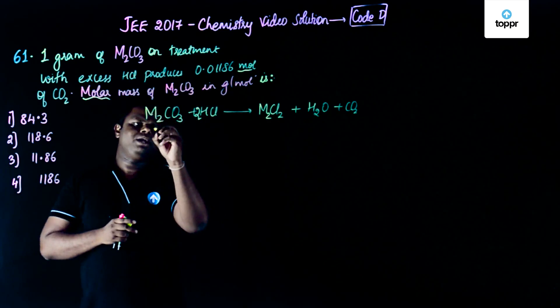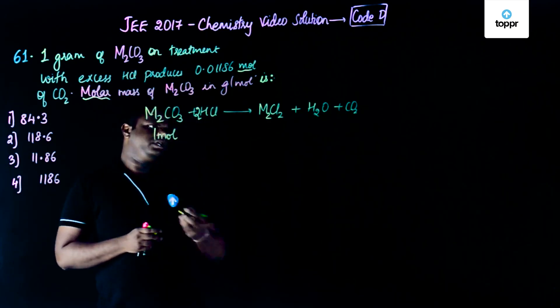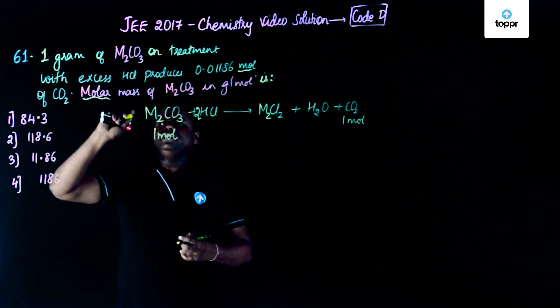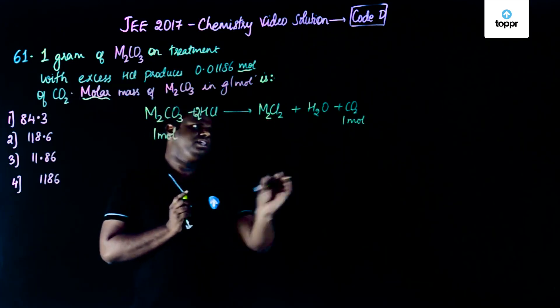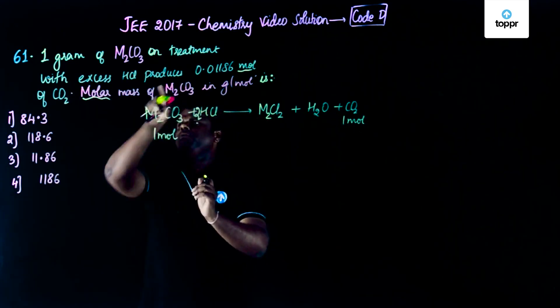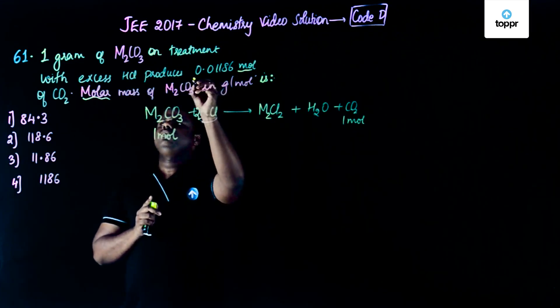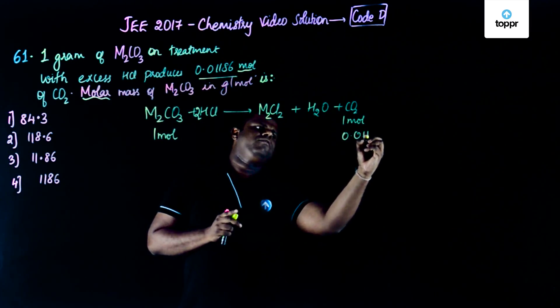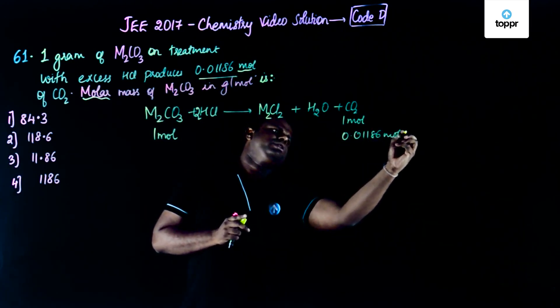If you could see, one mole of M2CO3 would give one mole, would release one mole of CO2, correct. So that means one mole of M2CO3 releases one mole of CO2 but how many moles of CO2 has been released? It is 0.01186 moles of CO2 released.